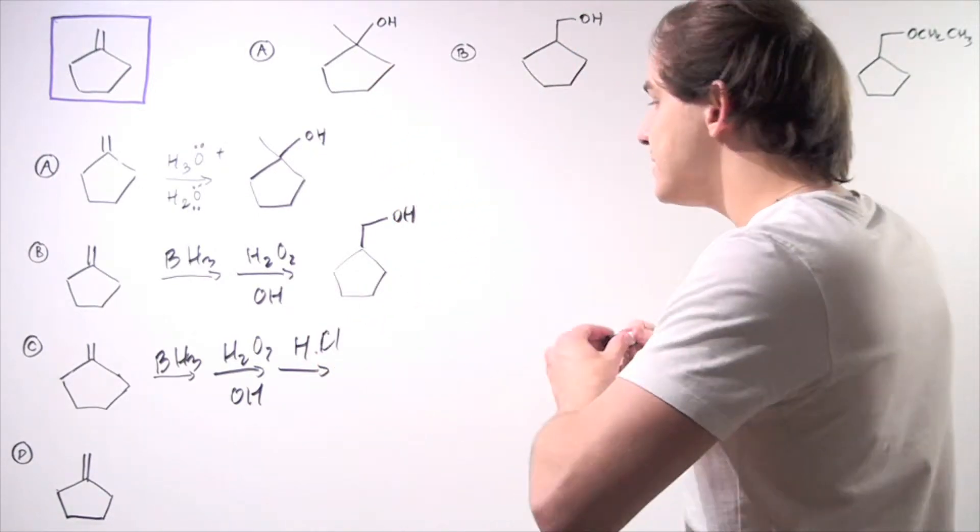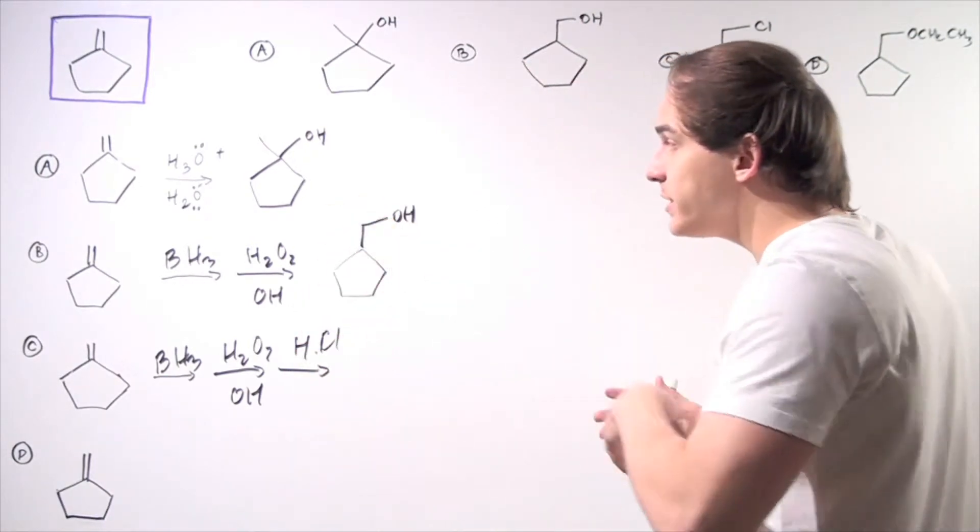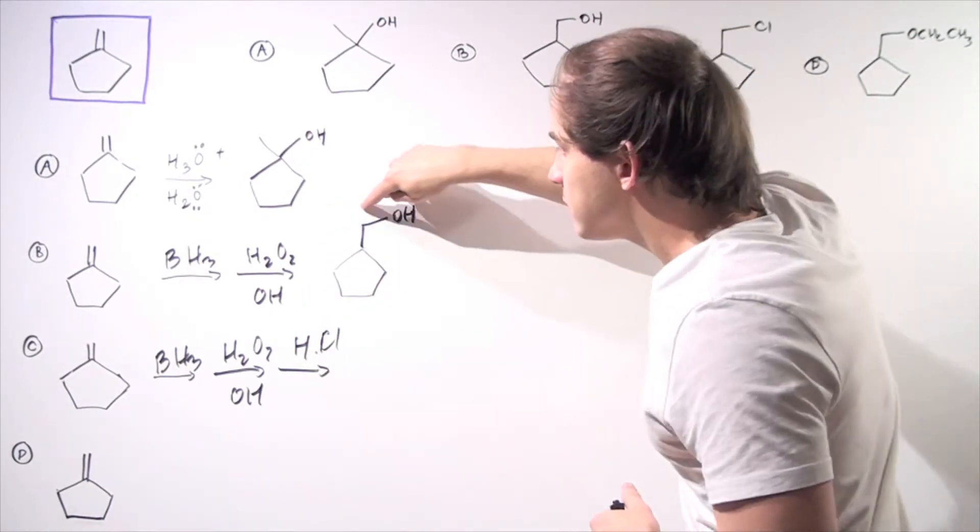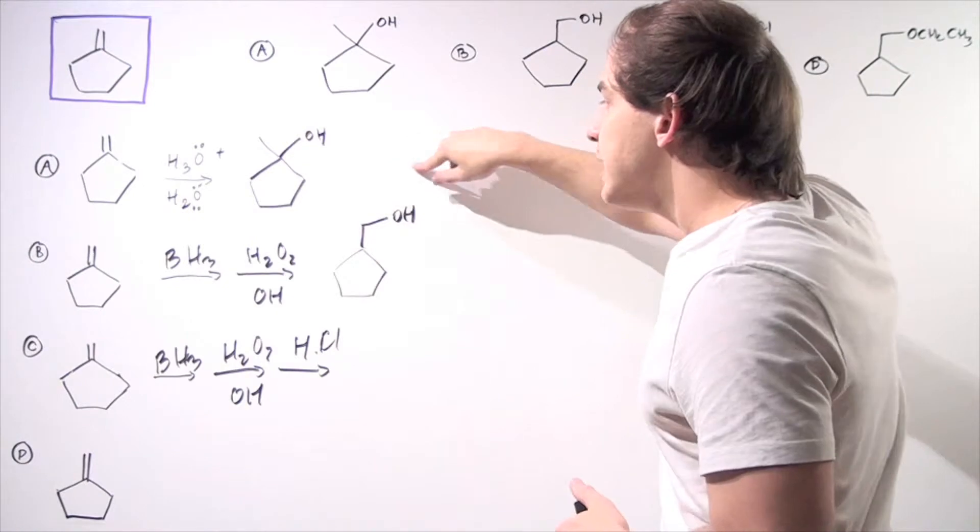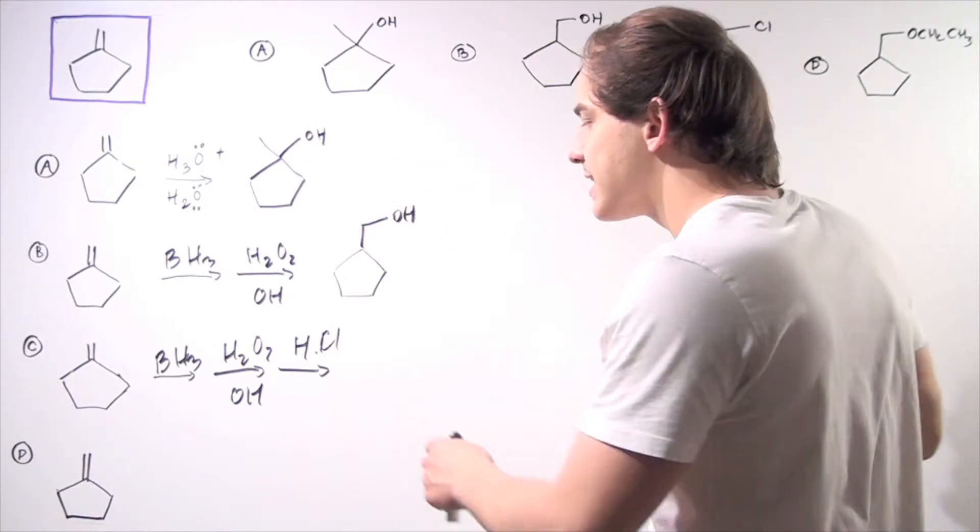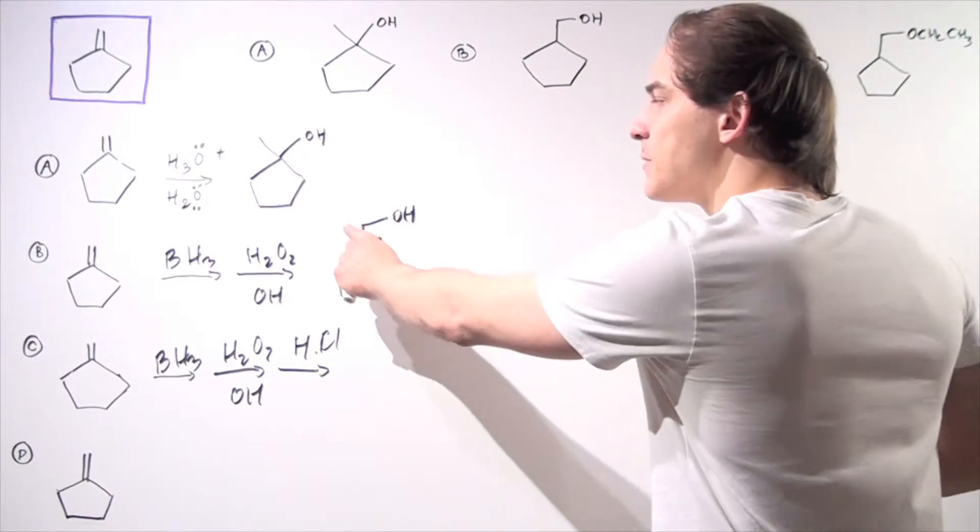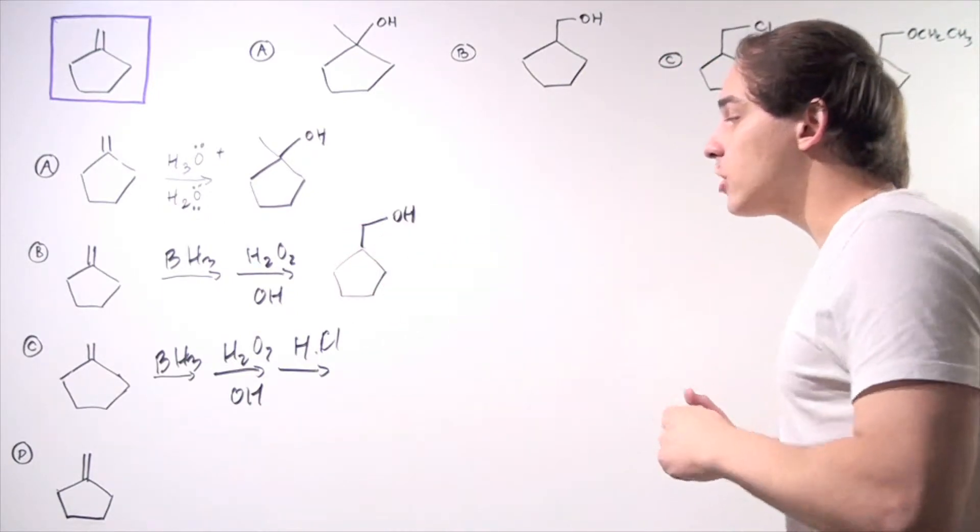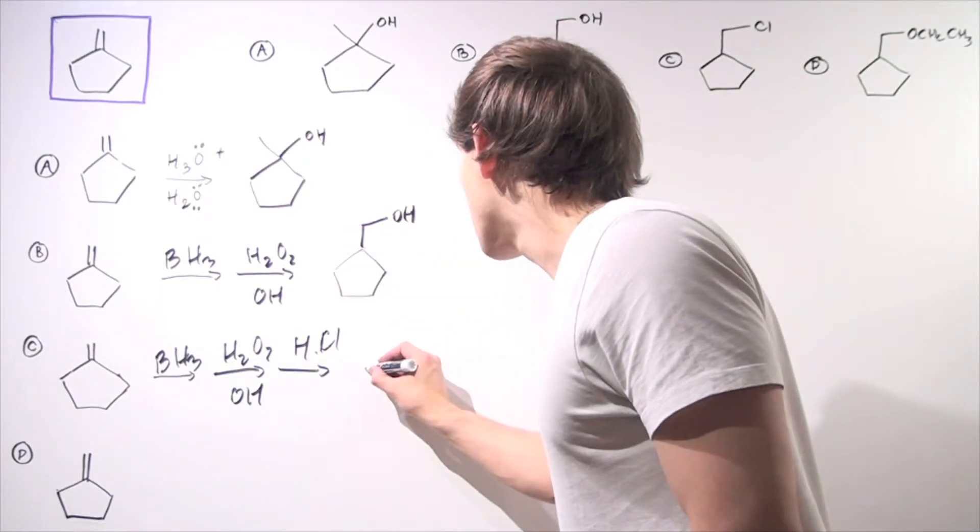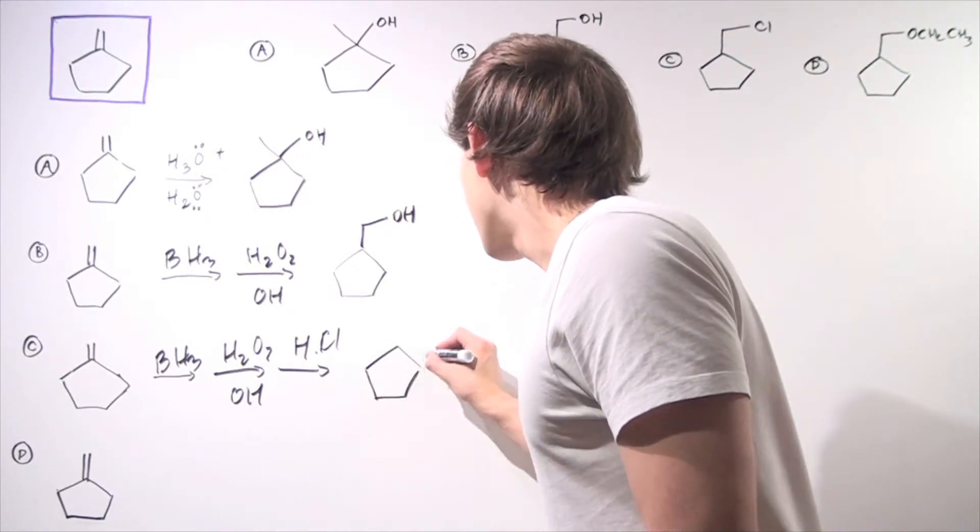The H protonates this oxygen, creating a good leaving group. The good leaving group is then displaced by this chloride via an SN2 reaction because this is a primary carbon. We produce the following molecule as wanted with Cl.